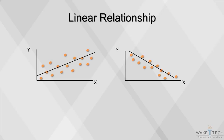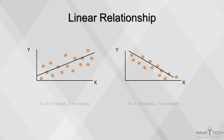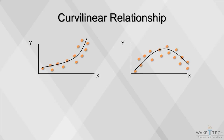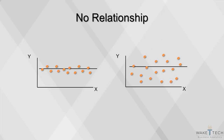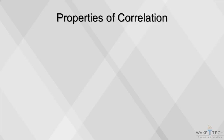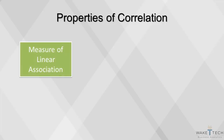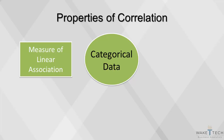In these scatter plots, what is happening to y as x is increasing? An important point to remember is that correlation is a measure of linear association. If the relationship is curvilinear, using the correlation measure is not appropriate. If x changes and y stays the same, then the correlation is zero. Since the correlation measure is a measure of linear association, we cannot use correlations on categorical data.